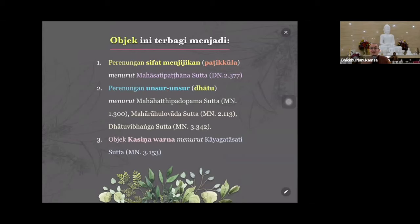Di sana Buddha mengajarkan melihat 32 bagian tubuh sebagai menjijikan. Jadi karena kita bukan bahas tentang Mahasatipatthana Sutta, pertama objek ini bisa digunakan untuk merenungkan patikula - menurut Satipatthana Sutta atau Mahasatipatthana Sutta. Yang kedua, dengan objek ini kita juga bisa merenungkan unsur-unsur, yaitu dhatu - elemen-elemen di dalam tubuh. Menurut sutta apa? Maha Satipatthana Sutta, Maharahulovada Sutta, atau Dhatuvibhanga Sutta. Di sana di sutta-sutta tersebut, Buddha mengajarkan bukan merenungkan sebagai sifat menjijikan, tapi merenungkan unsur-unsur.